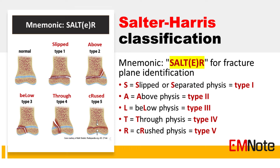S stands for slipped or separated physis, seen in Salter-Harris type 1 fractures. A stands for above physis, seen in type 2 fractures. L stands for below physis, seen in type 3 fractures. T stands for through physis, seen in type 4 fractures. R stands for crushed physis, seen in type 5 fractures.